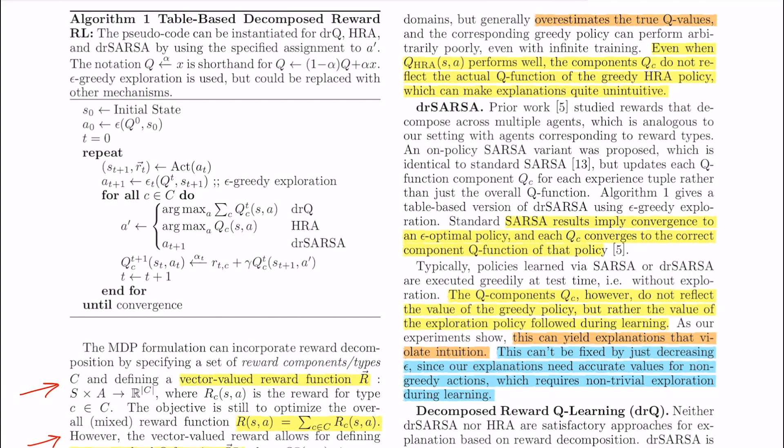For algorithms like SARSA which does make the component Q values converge, SARSA reflects the exploratory policy the agent had taken during training rather than the greedy policy the agent has during test time. This can lead to explanations that may seem unintuitive. This is what the authors point out here.